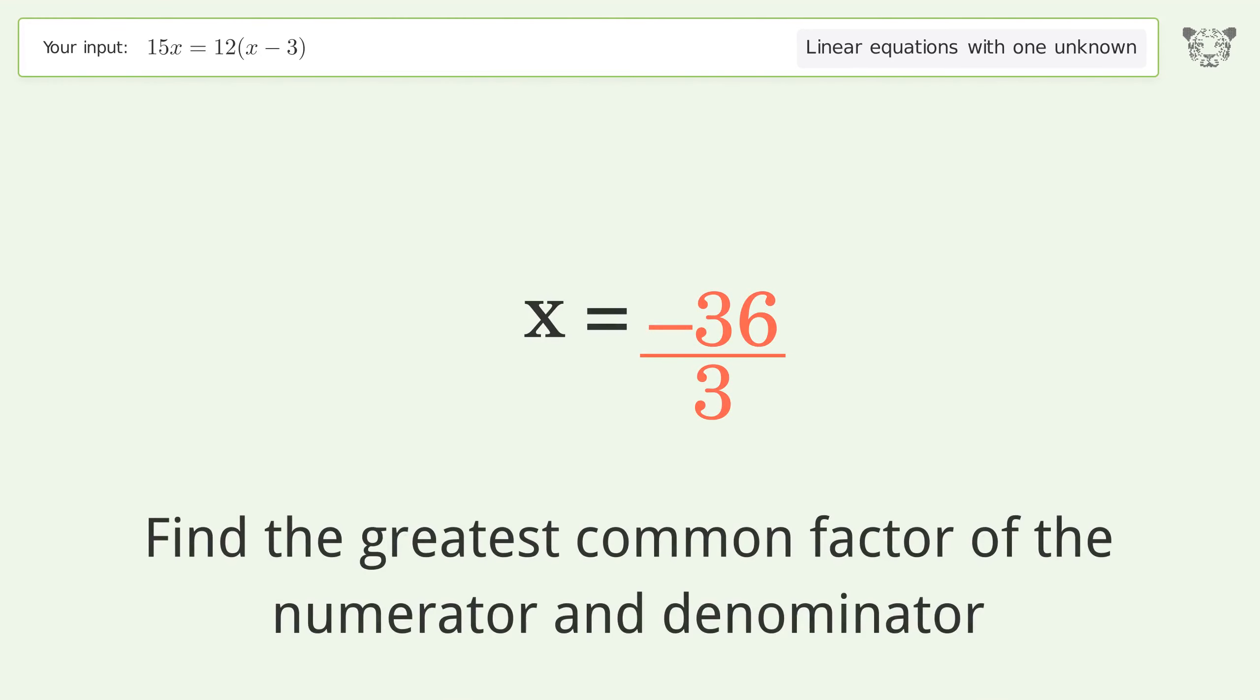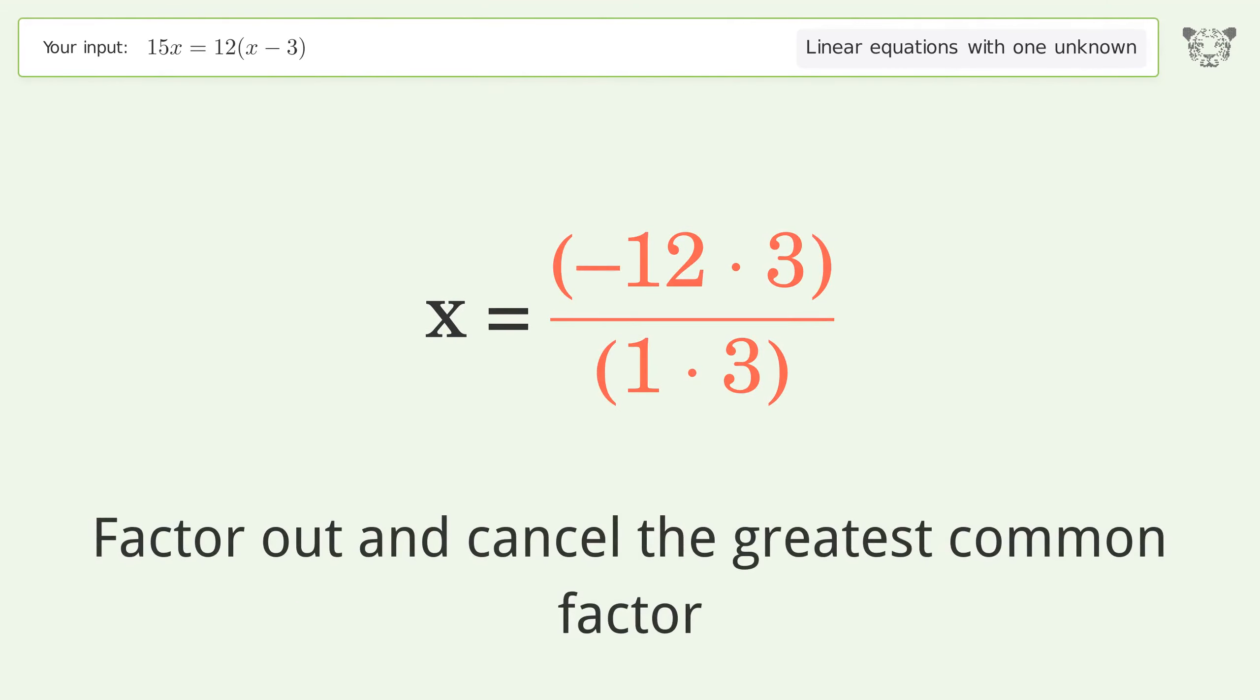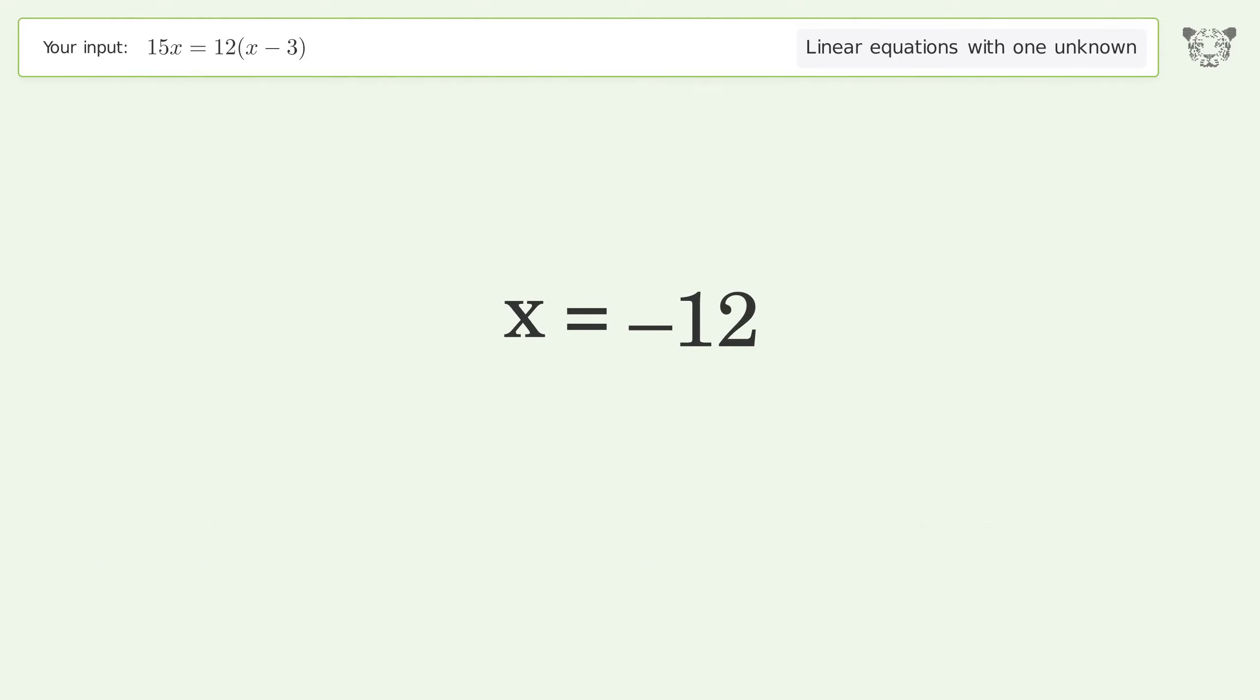Find the greatest common factor of the numerator and denominator. Factor out and cancel the greatest common factor. And so the final result is x equals negative 12.